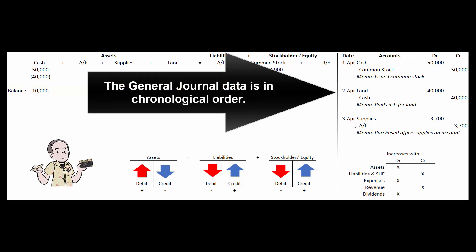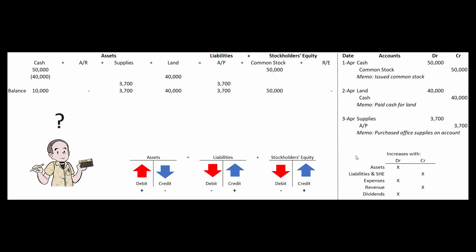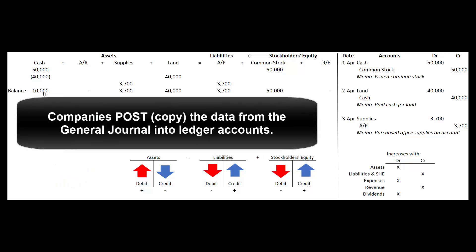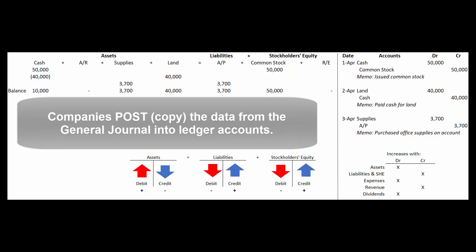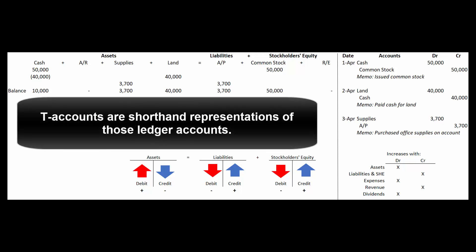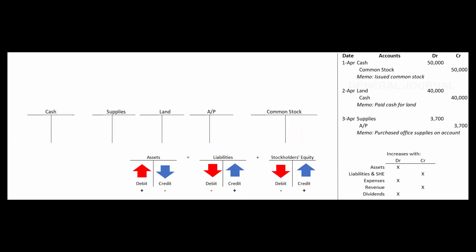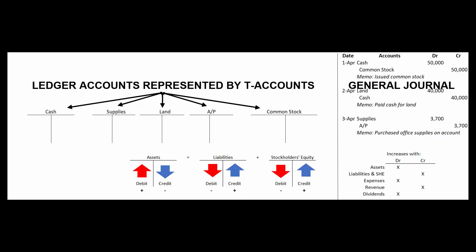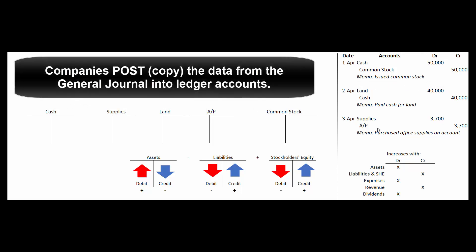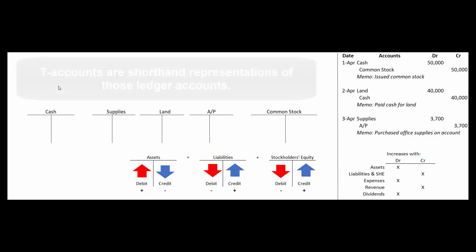We've recorded everything in chronological order. If my boss walks in and wants to know how much cash we have, imagine there are dozens of transactions — how would I find the balance? In real life, companies use ledger accounts to track balances in separate accounts. In accounting, we represent those with T-accounts. We take journal entries made in the general journal and post them to ledger accounts.